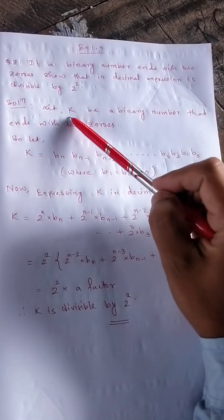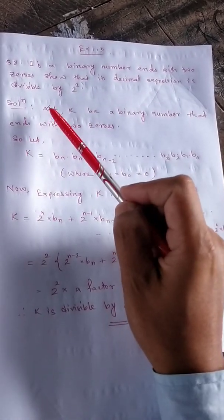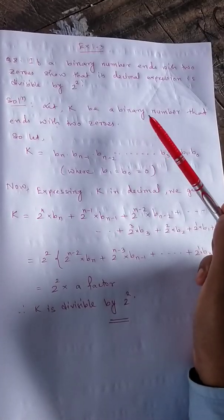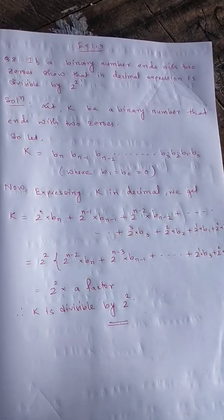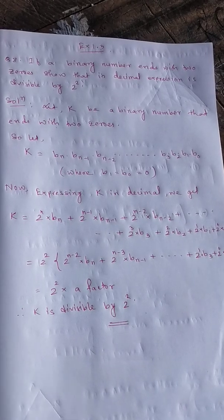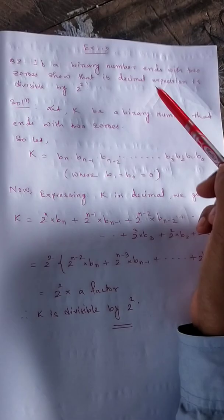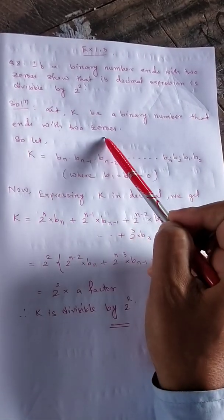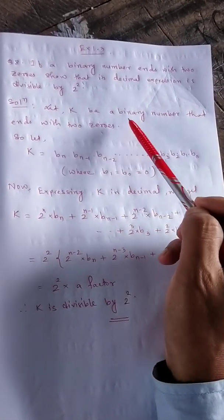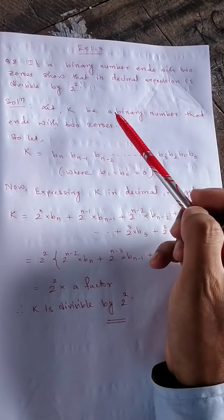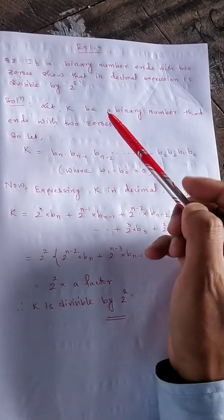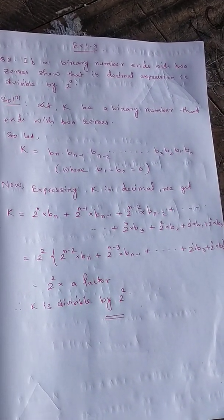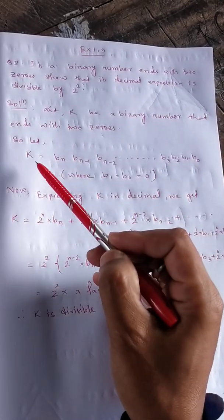For the proof, let k be a binary number. It may be many types — one zero zero one one one, and so on. Let k be a binary number that ends with two zeros. Since binary numbers can be of unlimited or infinite length — like one zero one zero one — that is why we take k to be a general binary number.